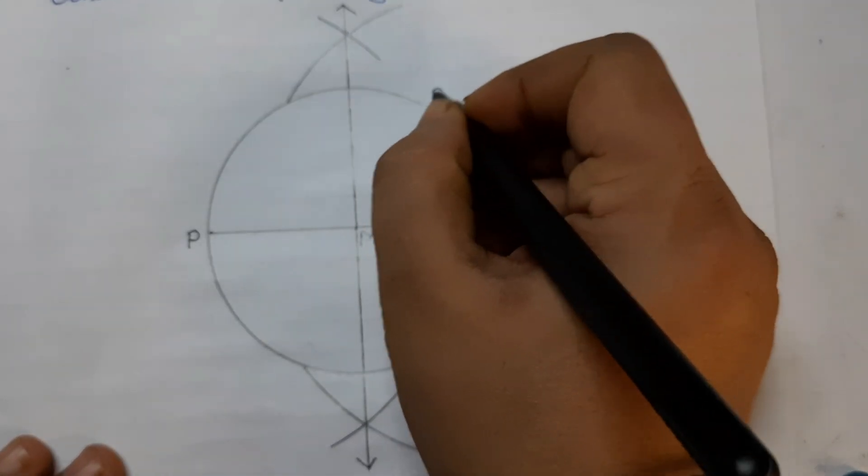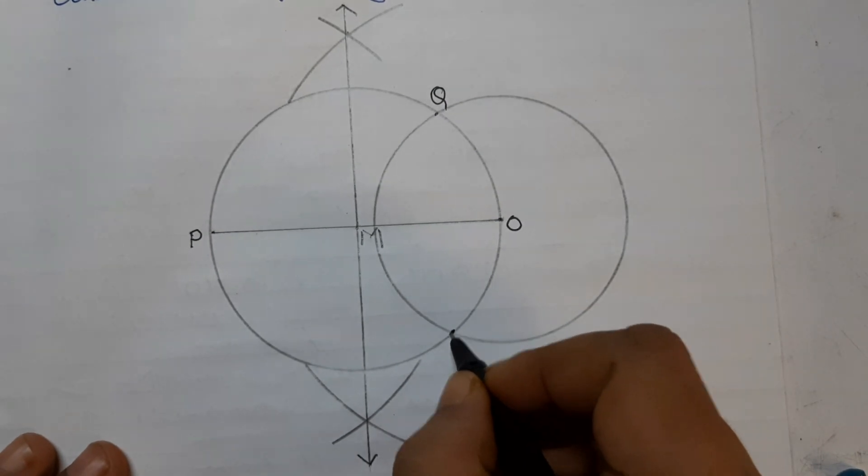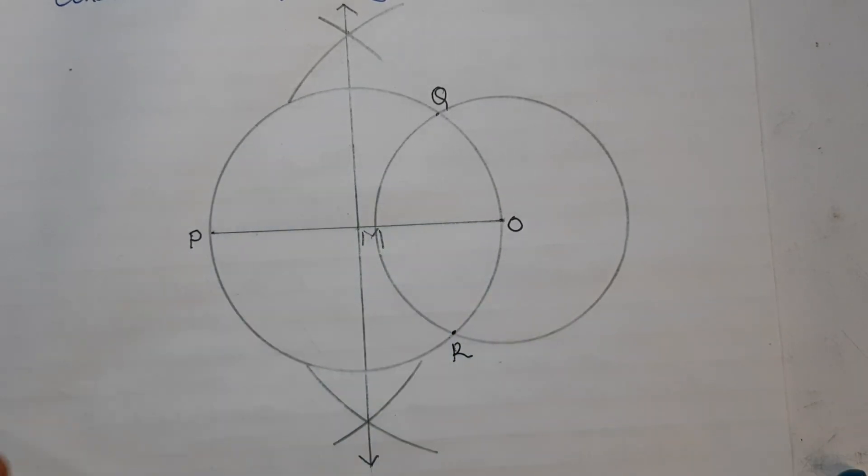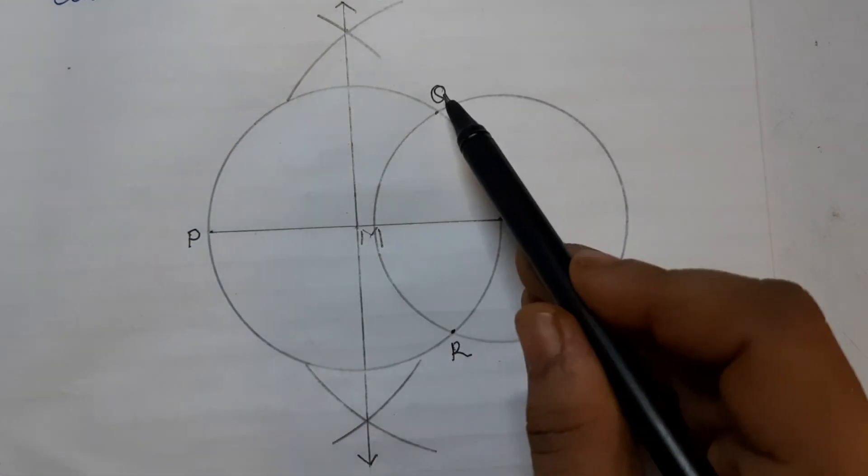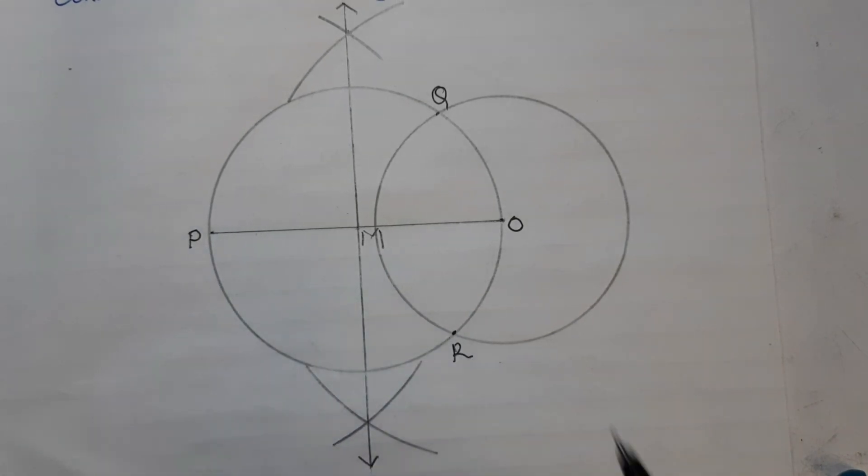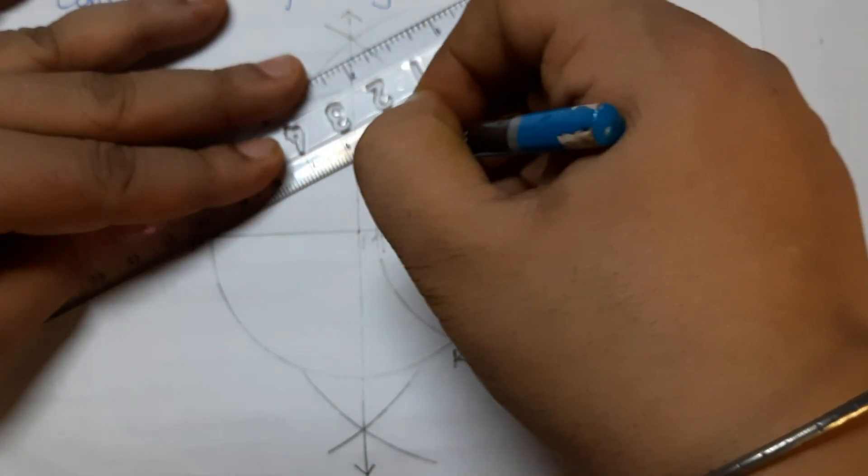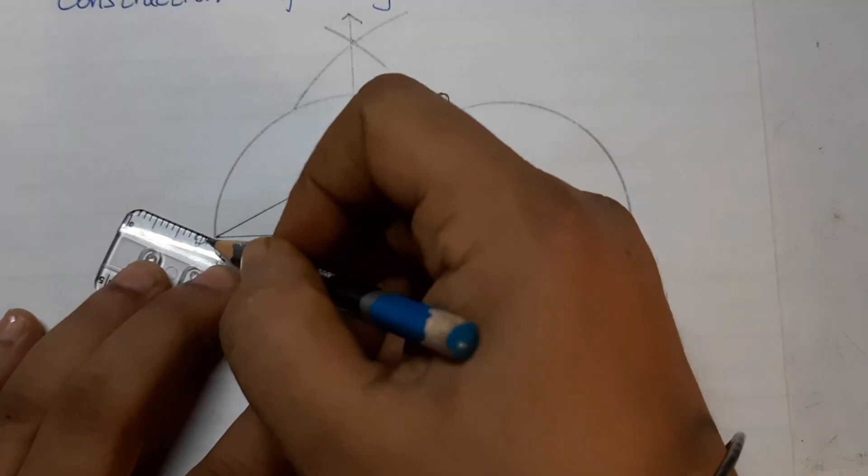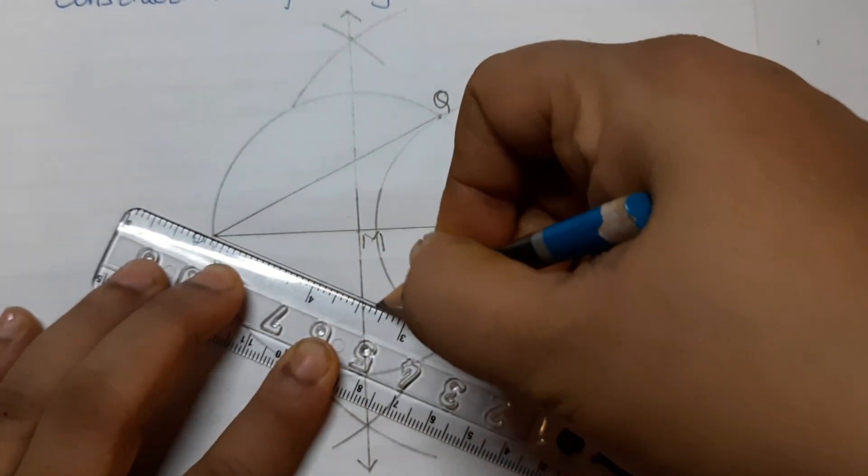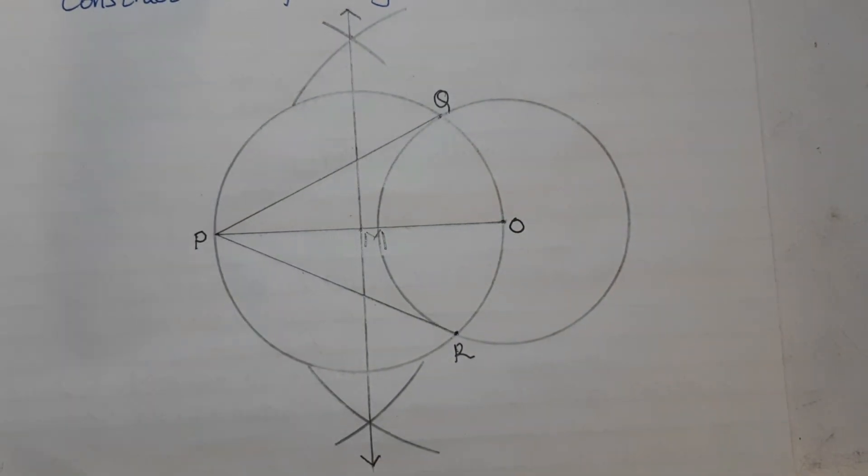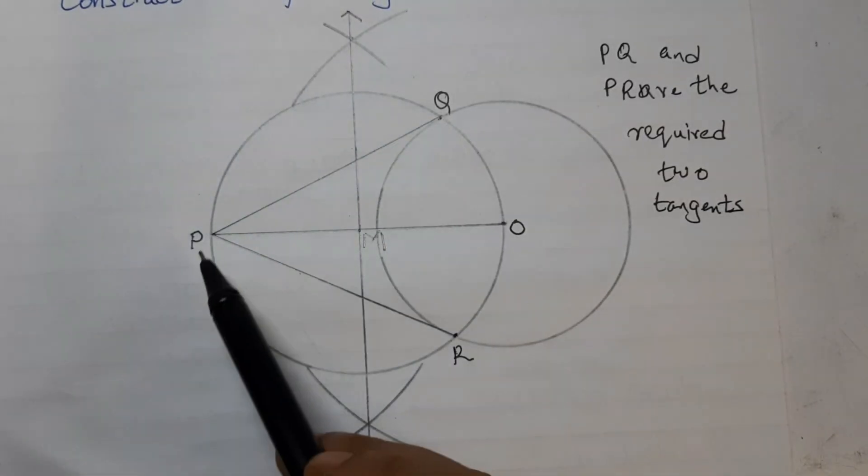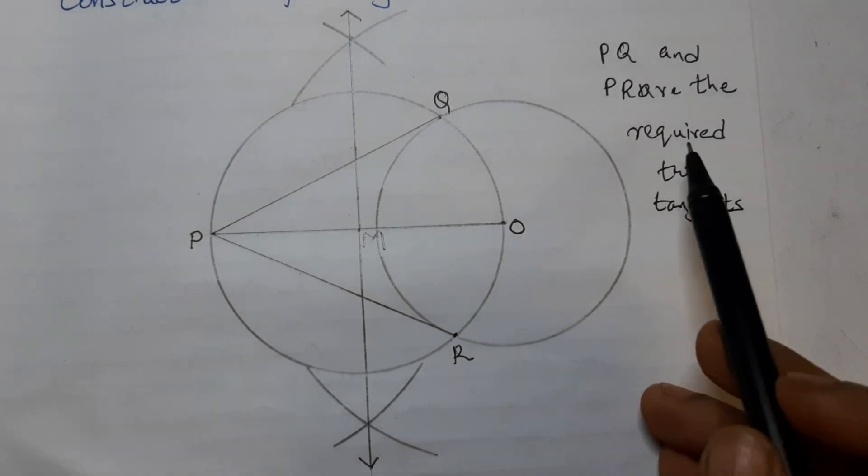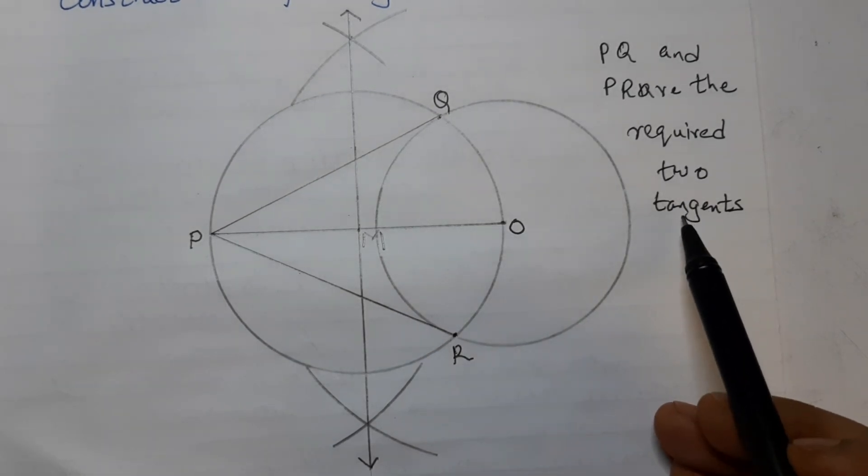This is point Q and this point is R. Join PQ and PR. PQ and PR are the required two tangents.